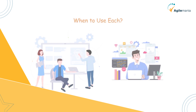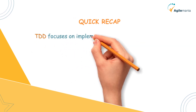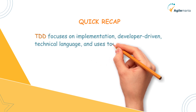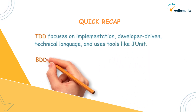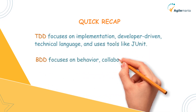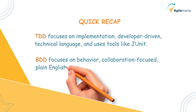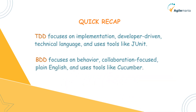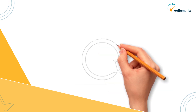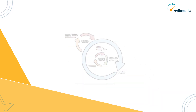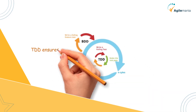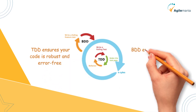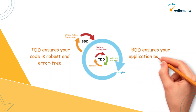Here's a quick recap. TDD focuses on implementation, is developer-driven, uses technical language, and uses tools like JUnit. BDD focuses on behavior, is collaboration-focused, uses plain English, and uses tools like Cucumber. TDD and BDD are both powerful approaches, but they serve different purposes. TDD ensures your code is robust and error-free, while BDD ensures your application behaves as users expect. The right choice depends on your project's needs.